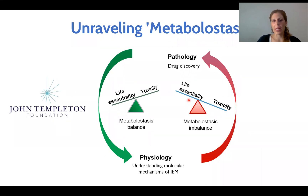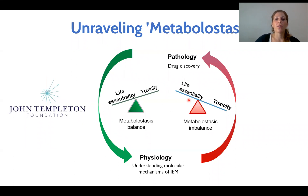If metabolites can form aggregates, it means that there must be quality control mechanisms in cells that will allow sufficient supplies of metabolites on one end, but also will strictly monitor their levels to avoid aggregation. This novel discovery led to a new study in our lab called metabolostasis — the cellular process that keeps metabolite homeostasis in vivo. This research is supported by the John Templeton Foundation.